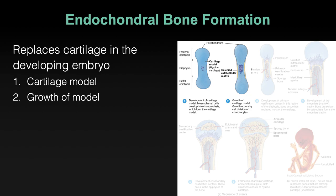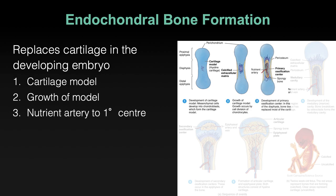As it grows, the cartilage proliferates, but it's still not a bone. Something has to happen for it to become a bone. That catalyst is the main arterial supply — a nutrient artery — piercing that model right in the middle.